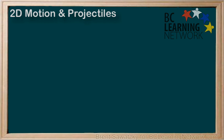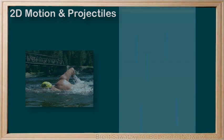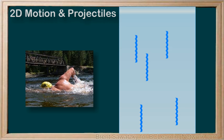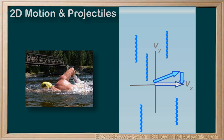First, we solved problems like a swimmer in a river. In this case, we found that we could break the motion into perpendicular directions associated with upstream-downstream, say Vy, and across the stream, which we would call Vx. We can treat these two directions independently and draw vectors to see what will happen or design a desirable outcome.